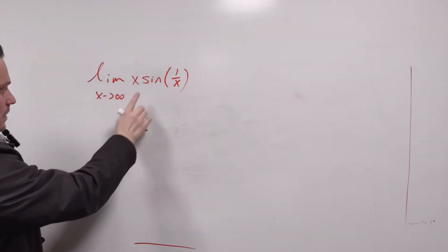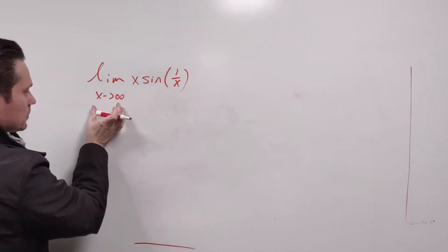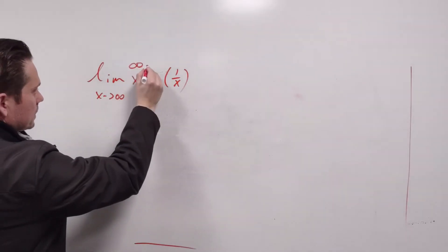Find the limit as x approaches positive infinity of x sine of 1 over x. First of all, in this current form, when x goes to infinity, it's of the form infinity times 0.